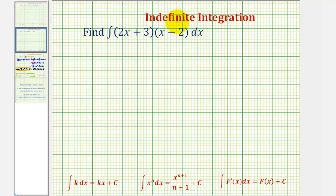We want to find the indefinite integral, or the antiderivative of the function, the quantity two x plus three, times the quantity x minus two.